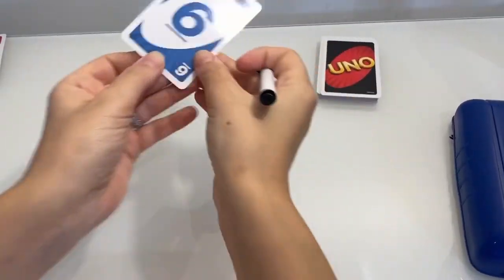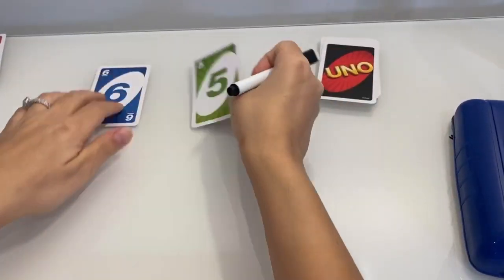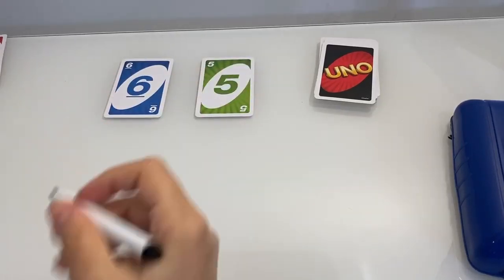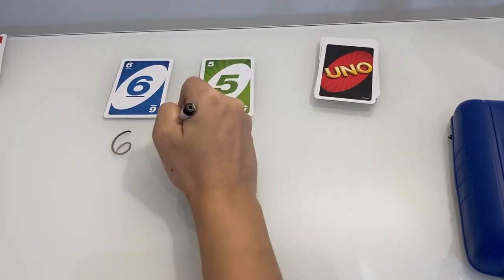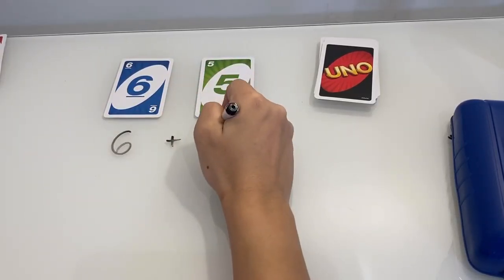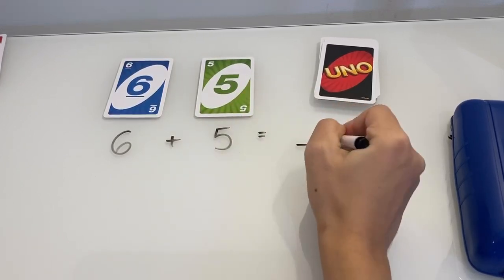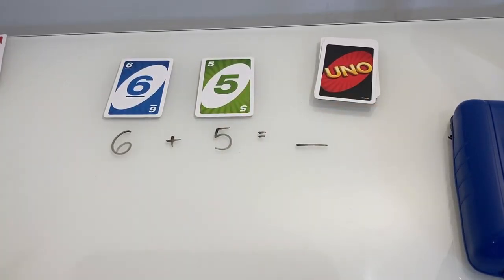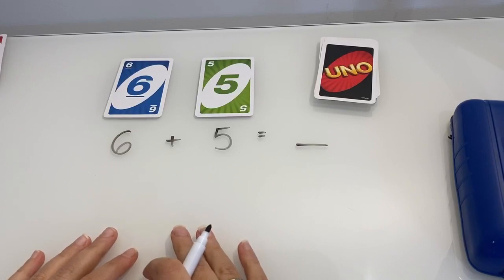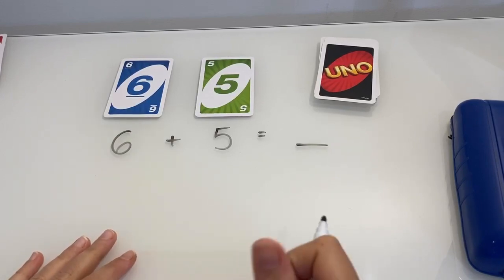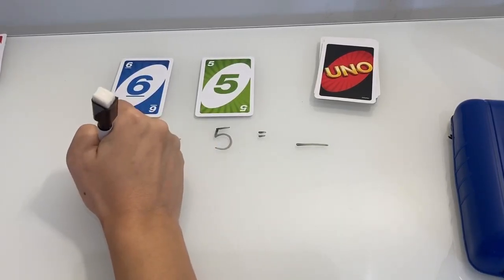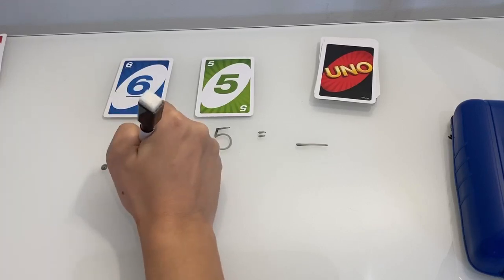Let's try another one. Six and five, so six plus five equals something. Now what I can do to help me is I can use some counters if I've got some counters, or I can even draw some dots to help me with the counting.